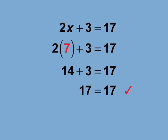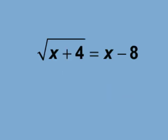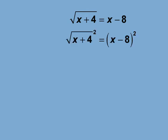Yet, there are times when solving an equation results in more solutions than expected. In these cases, one of the solutions may not result in a true equation. Let's look at an example. Here is an equation: the square root of the quantity x plus 4 equals x minus 8. To solve for x, first square both sides of the equation. The term on the left becomes x plus 4.